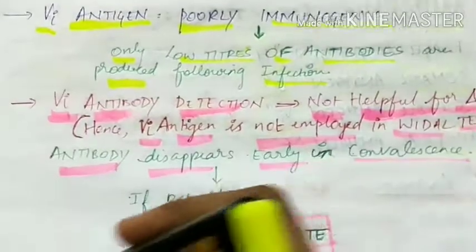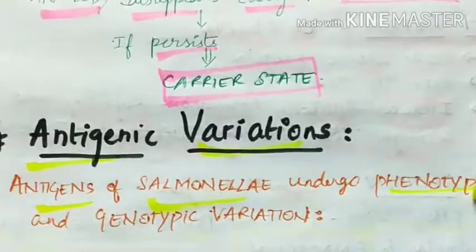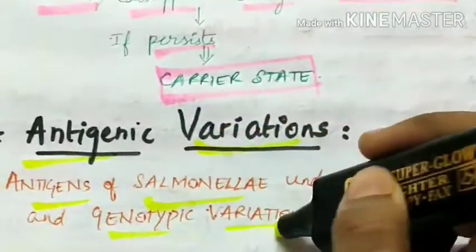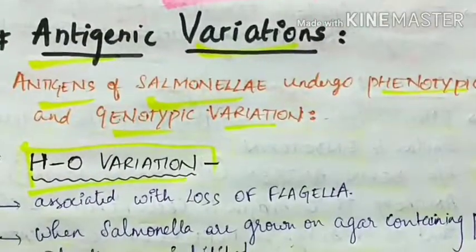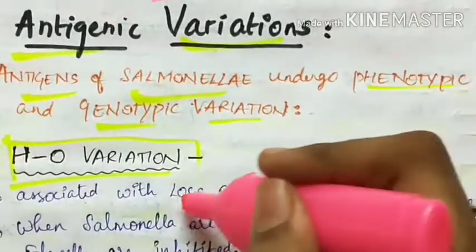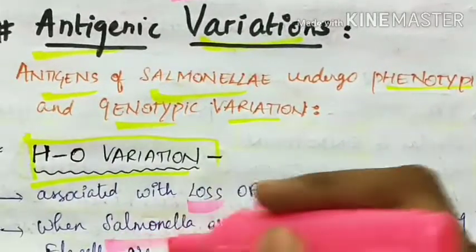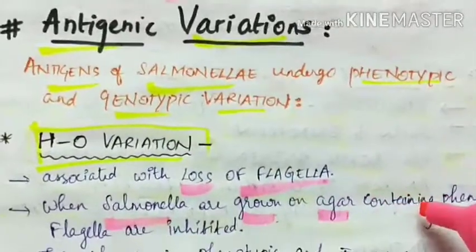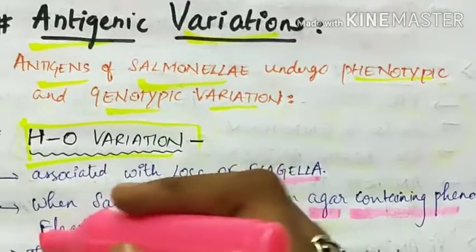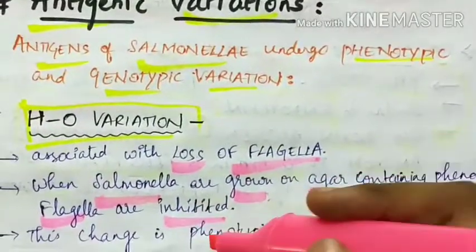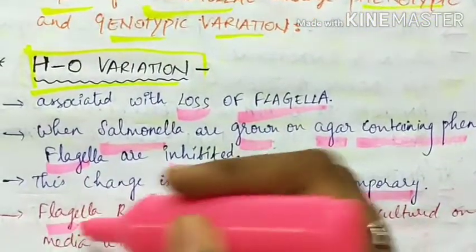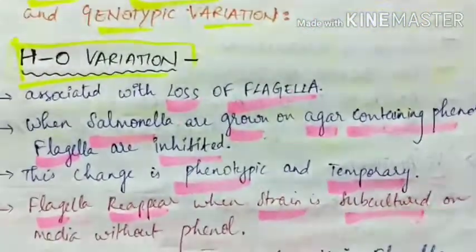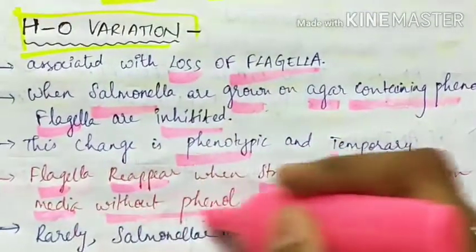Let's now see about the antigenic variations. The antigens of Salmonella undergo phenotypic and genotypic variations. First is H-O variation. This is associated with loss of flagella. When the Salmonella are grown on agar containing phenol, the flagella are inhibited. This change is phenotypic and it is temporary. The flagella reappears when the strain is subcultured on the media without phenol.